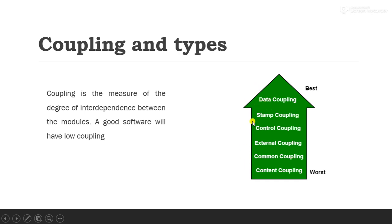The six types of coupling are: first, data coupling; second, stamp coupling; third, control coupling; fourth, external coupling; fifth, common coupling; and last, content coupling. This is the hierarchy from best to worst — data coupling is the best among all, and content coupling is the worst. So we need to have as low coupling as possible. If coupling must exist, data coupling is the best choice.